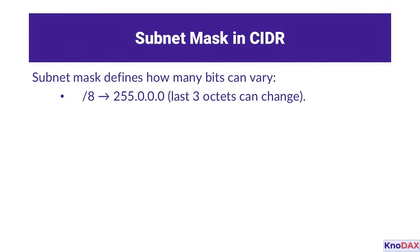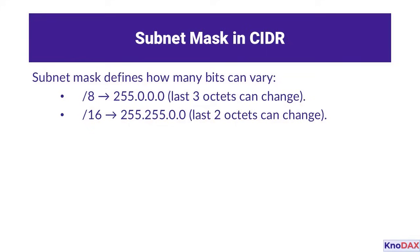Let's take a closer look at how subnet masks define the number of bits that can vary within an IP address range — a concept central to understanding CIDR. First, a /8 subnet mask, represented as 255.0.0.0: the first octet remains fixed while the last three octets can vary. Next, the /16 subnet mask, shown as 255.255.0.0: the first two octets stay constant, leaving the last two octets to change.